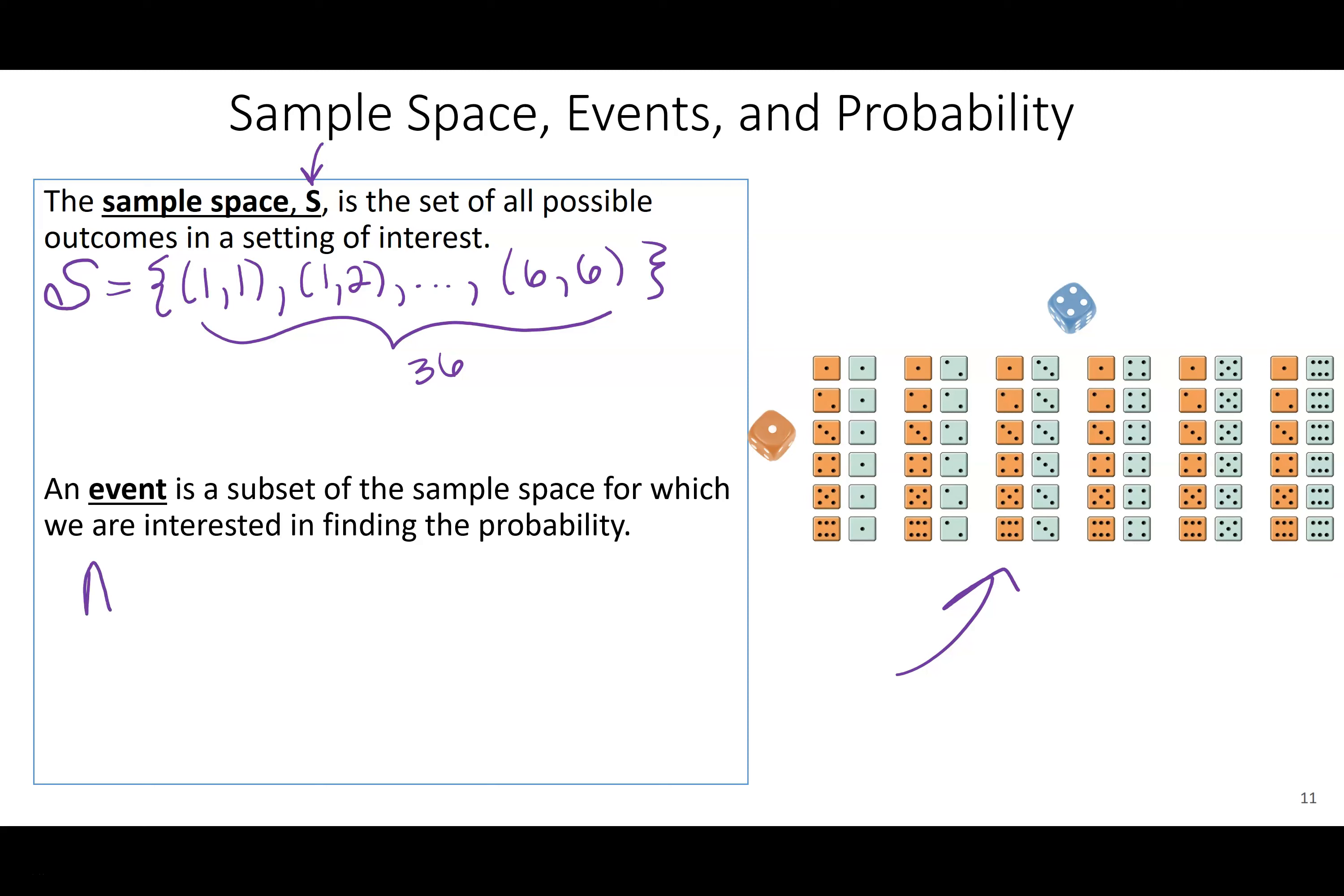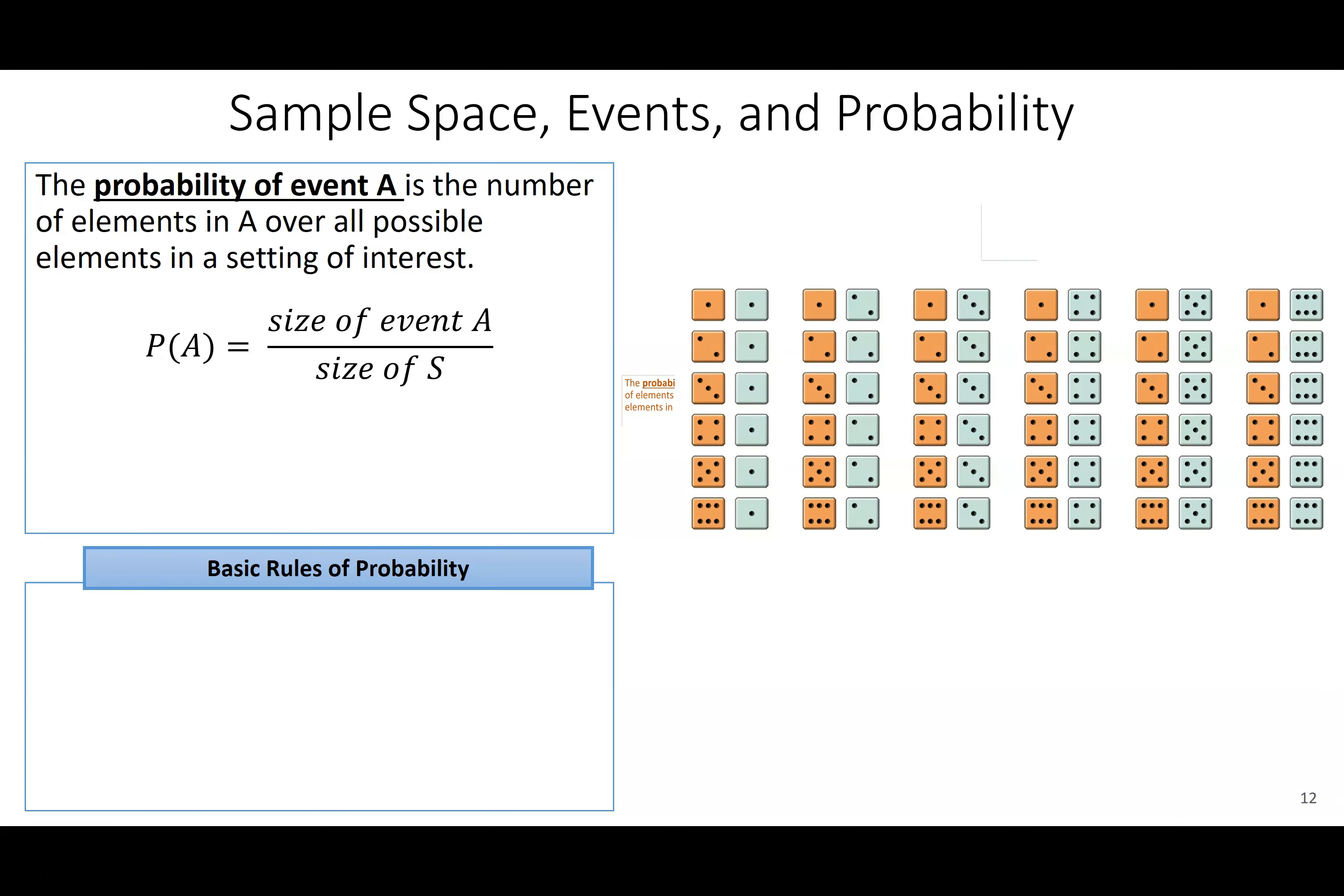Once I've defined my sample space, a lot of times we're going to focus on a particular event or set of events. So it's a subset of that sample space that we're interested in. For instance, maybe A is—we usually use capital letters from the beginning of the alphabet—so roll doubles. So roll doubles.